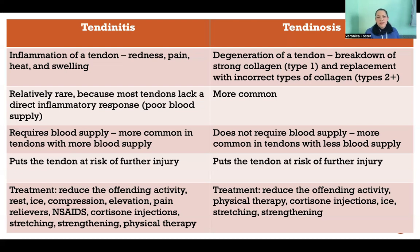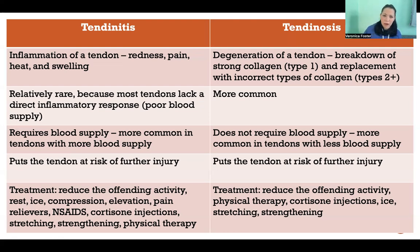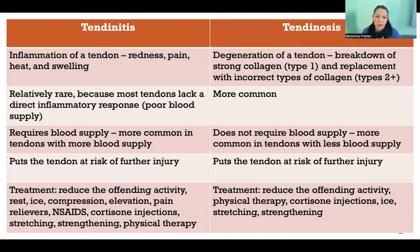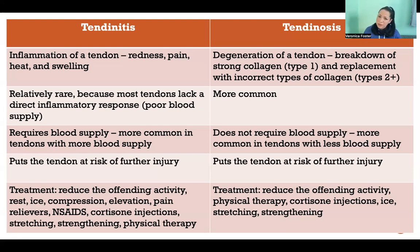Different tendons have a variable amount of blood supply, so certain tendons will be more prone to tendinitis because they have more blood supply available. But other tendons have a very weak blood supply — like the supraspinatus or the Achilles, for example. Those tendons are known to have an even worse blood supply than normal, making tendinosis much more likely than tendinitis in those cases.